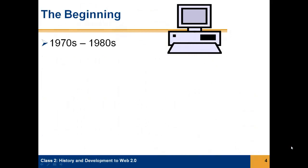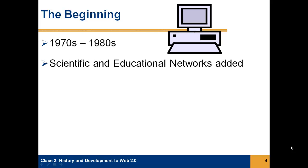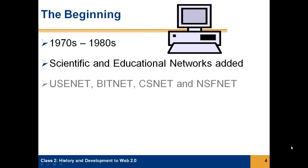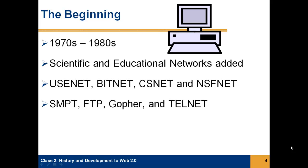In the 70s to 80s, scientific and educational networks were added to the original Internet. Some of the services they used were email, FTP, Gopher, and Telnet. Everything was text-based at this time — there were no images. Many of these services still remain today, along with many of the original networks.